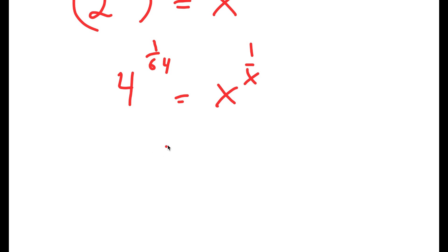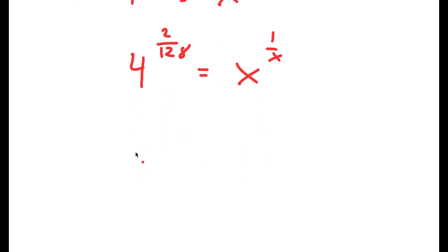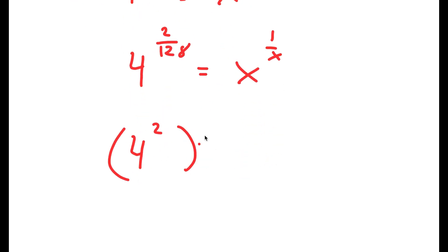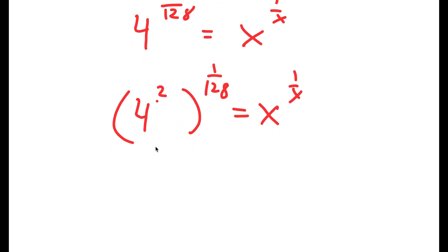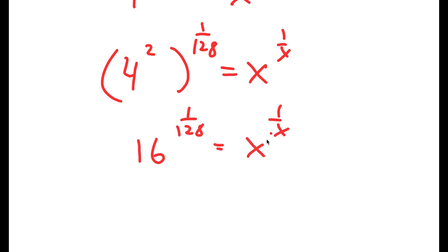And 4 to the power of 1 over 64 is the same thing as 4 to the power of 2 over 128. I can move this 2 to the front, so I get 4 squared to the power of 1 over 128 is equal to x to the power of 1 over x. So I get 16 to the power of 1 over 128 is equal to x to the power of 1 over x.